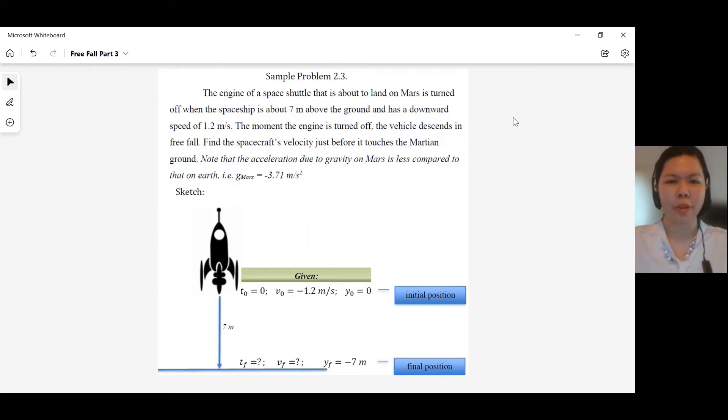Example 2.3. The engine of a space shuttle that is about to land on Mars is turned off when the spaceship is about 7 meters above the ground and has a downward speed of 1.2 meters per second. The moment the engine is turned off, the vehicle descends in freefall. Find the spacecraft's velocity just before it touches the Martian ground.